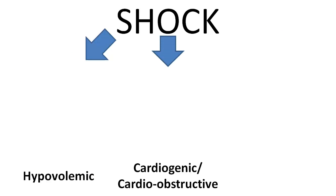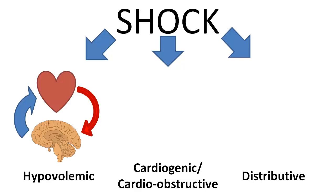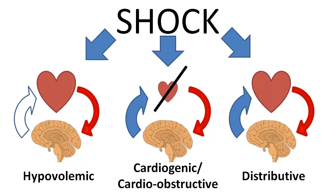There are several categories of shock: hypovolemic, cardiogenic or cardio-obstructive, and distributive shock. In hypovolemic shock, there is insufficient fluid in the vessels and insufficient cardiac preload to maintain a good cardiac output. In cardiogenic shock, there's insufficient contractility. And in distributive shock, there's too much vasodilation.